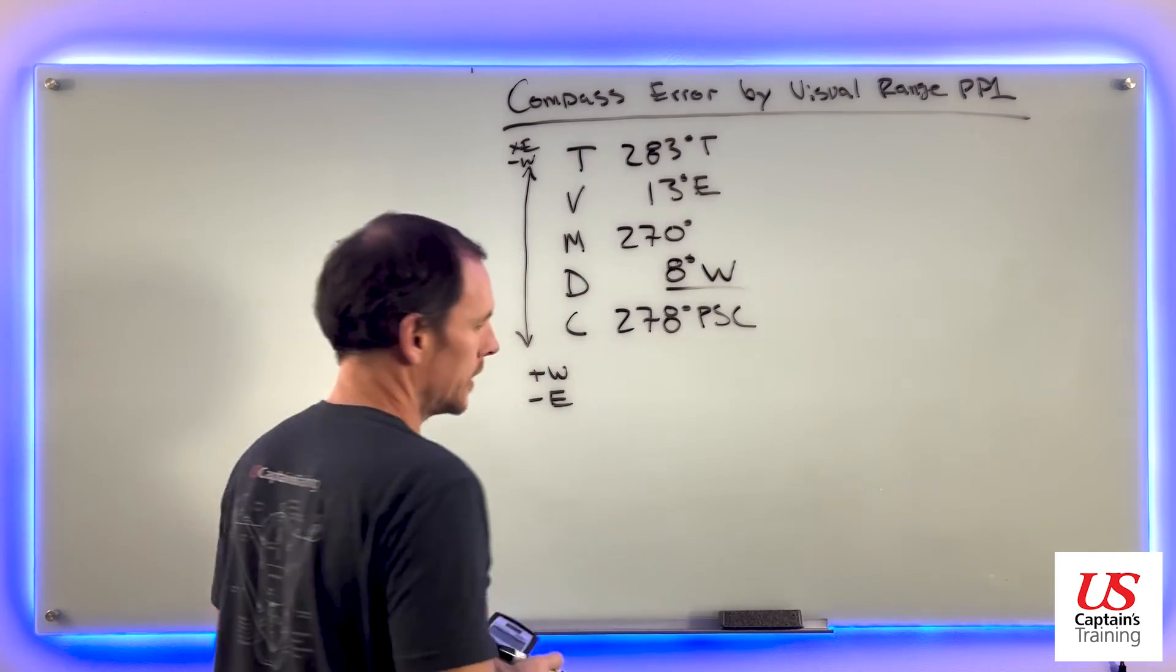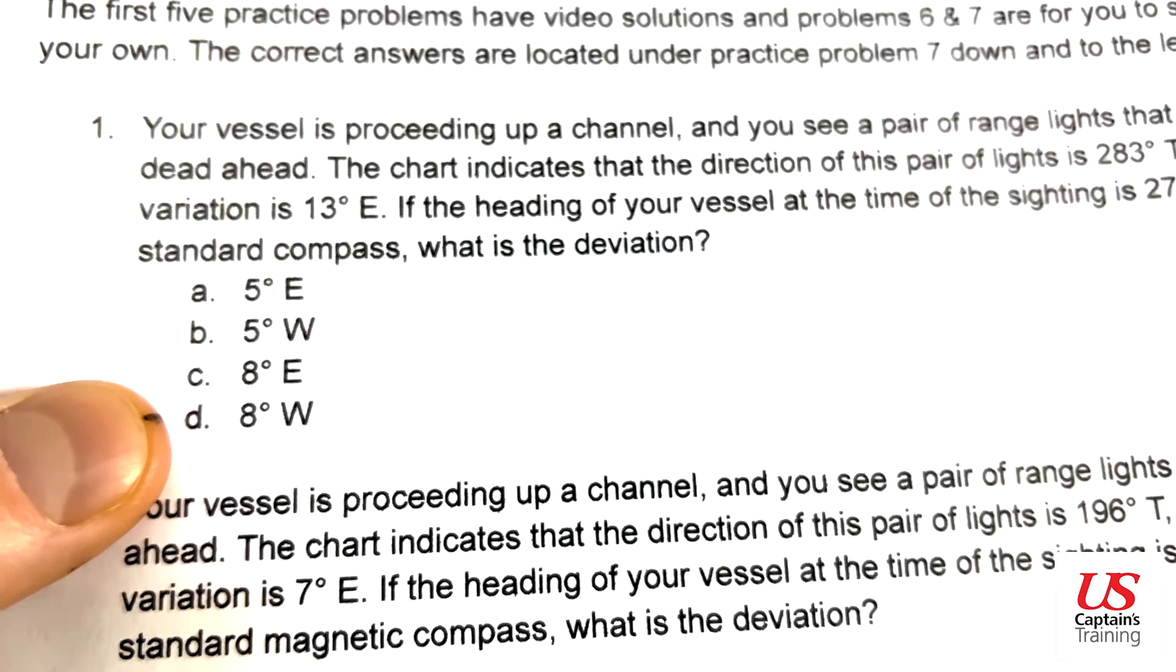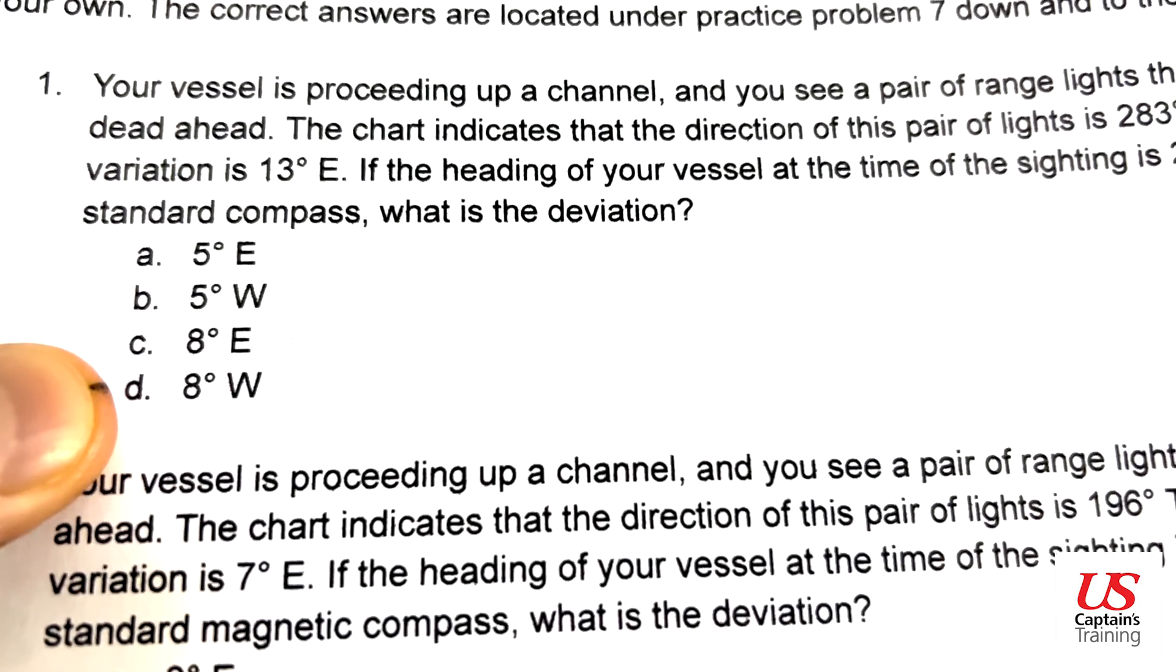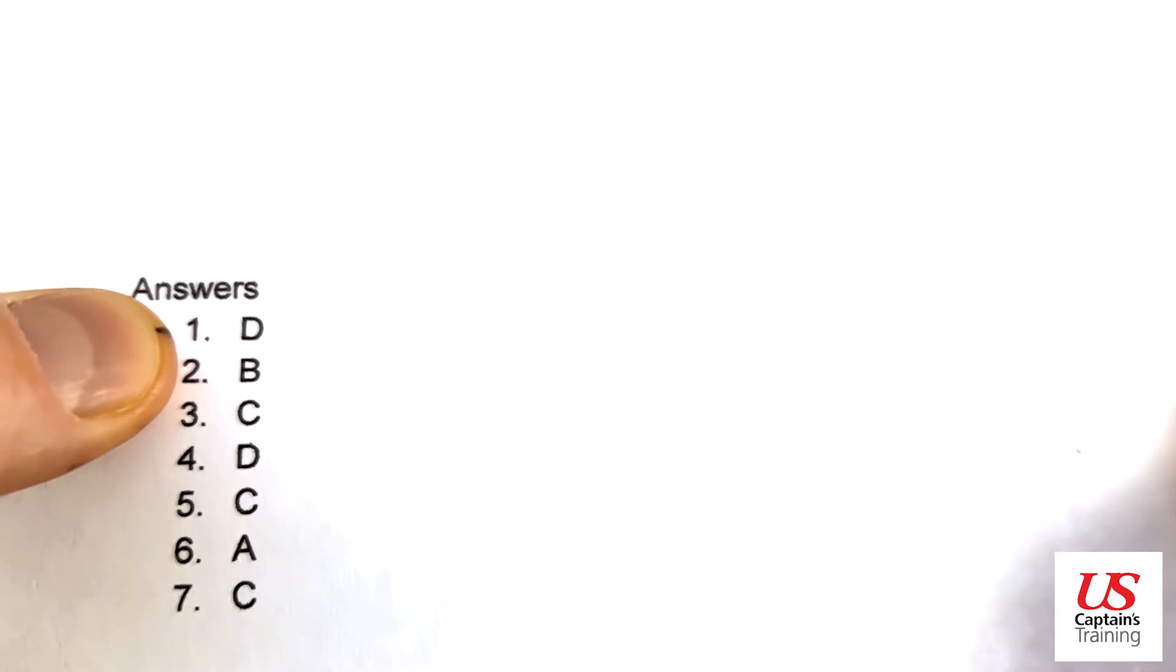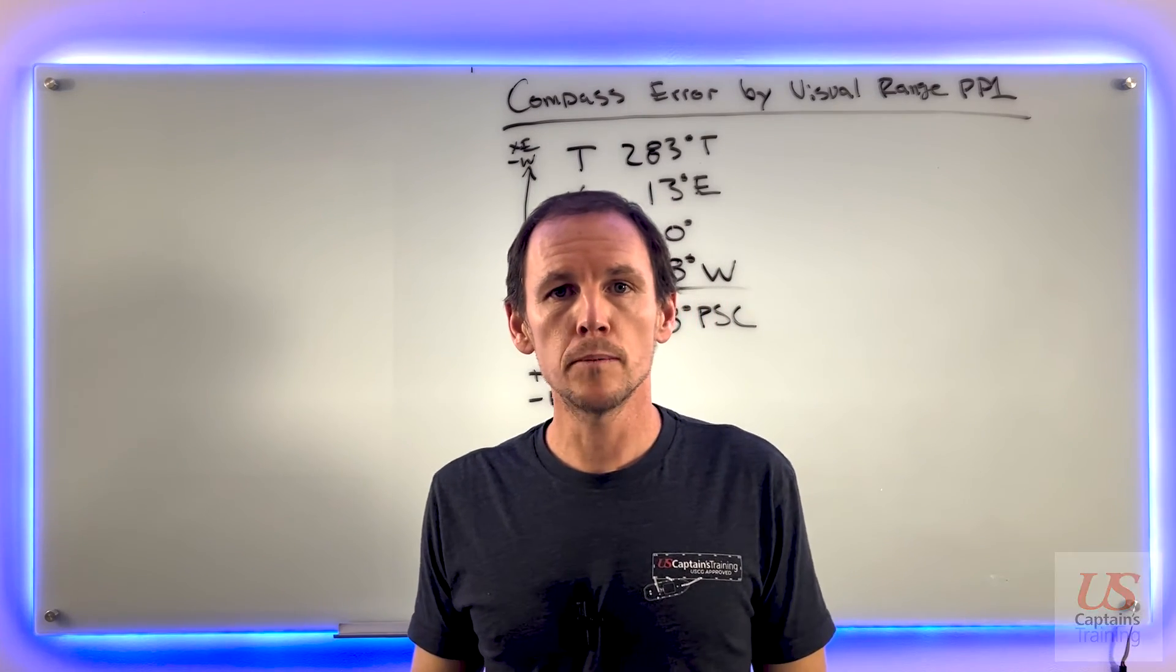Eight degrees west deviation. Let's see if we got it. Answer D: eight degrees west. We can check that. Answer D checks out. We'll see you on practice problem two.